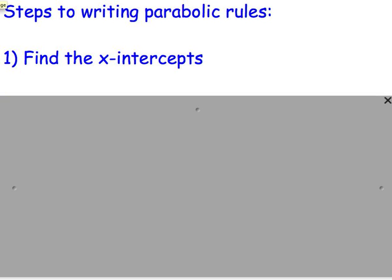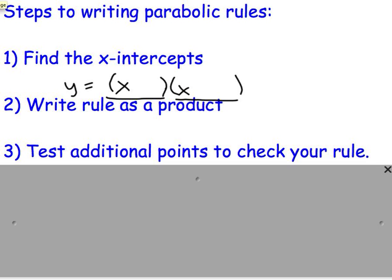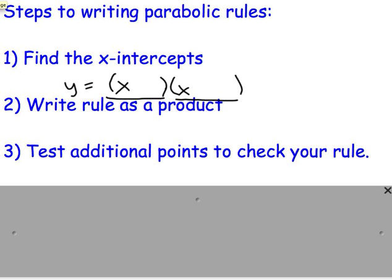Steps to writing a parabolic rule. Step 1 is find the x-intercepts. And remember, the x-intercepts will help you find your factored form of your function, so x plus or minus something. Write the rule as a product. So a product is something times something. So this is our product right here that you see in black. And once we find those x-intercepts, we write the rule as a product to match the intercepts. And then we test another point. You always want to test another point. Always test points to make sure that you have the right answer.